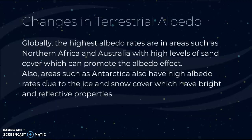Now we'll look at changes in terrestrial albedo. Globally, the highest albedo rates are in areas such as northern Africa and Australia with high levels of sand cover, which reflects incoming radiation much better than a dark surface. Areas such as Antarctica also have high albedo rates due to ice and snow cover, which have very reflective properties and create cooling impacts on the Earth's surface.